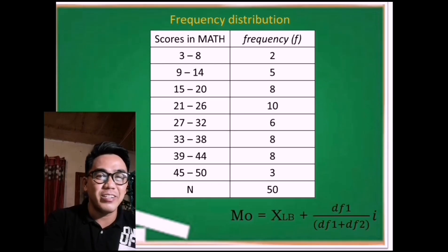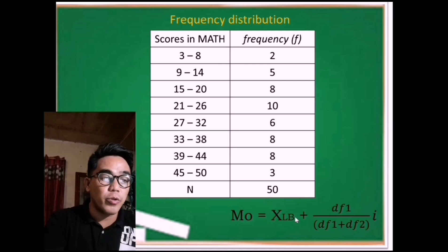Let us now put them together, the frequency distribution and the formula. As you can see, the class limit or class interval were arranged in ascending order. Right now, we're going to identify or reveal each value of the different terms.